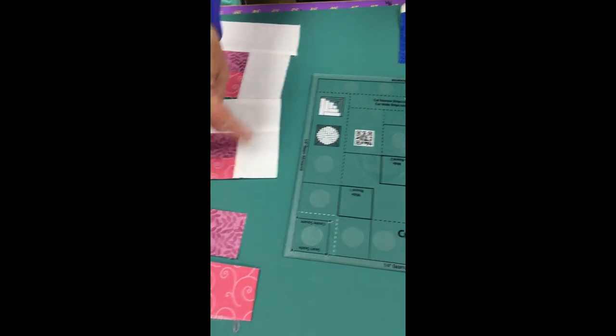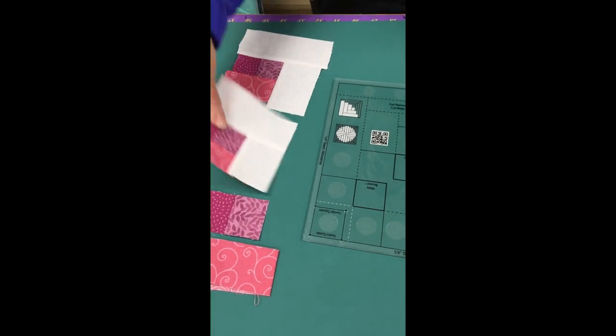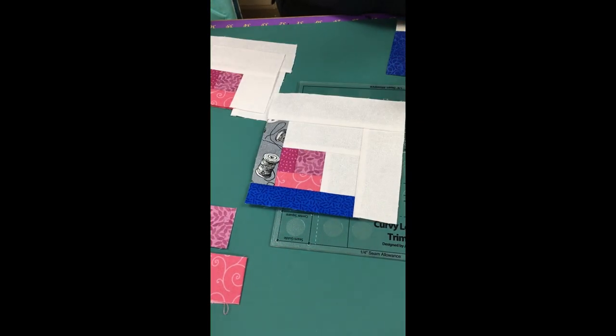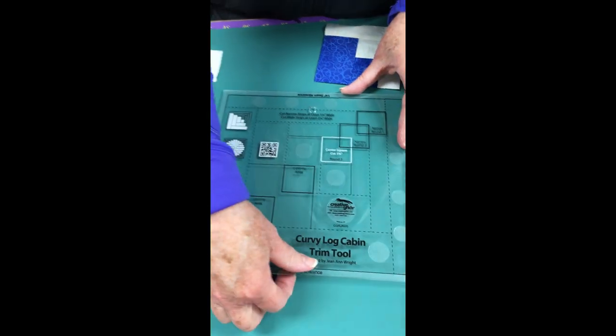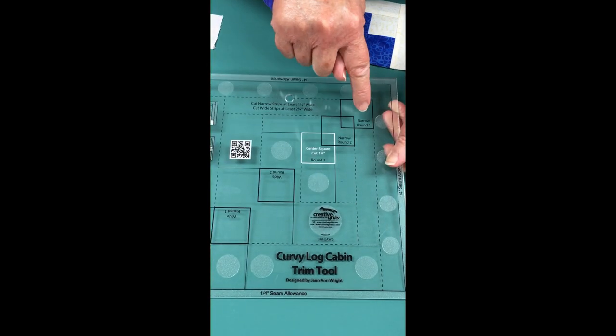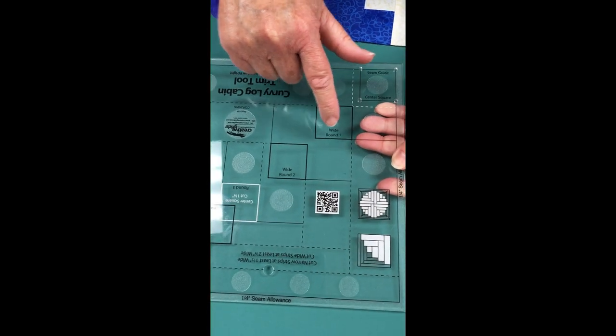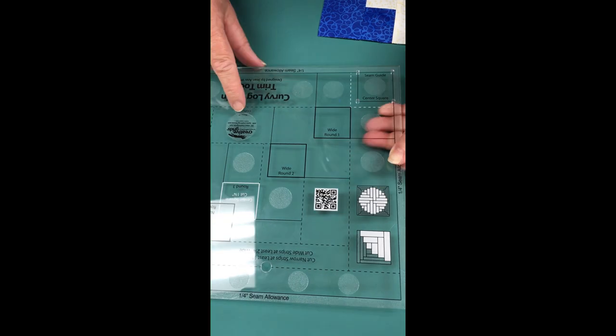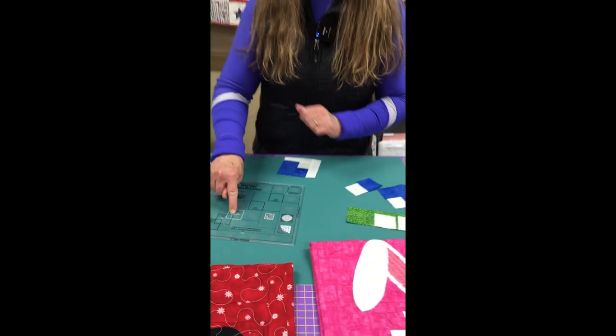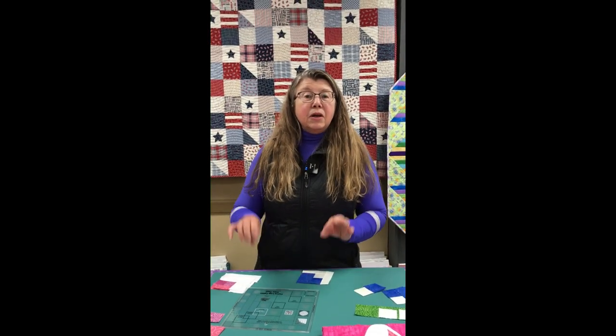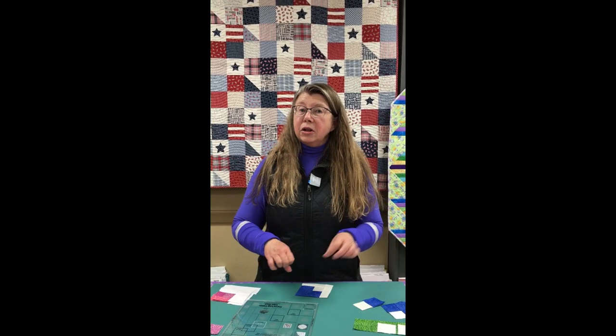Here's a block with one round added. You can continue to add rounds two and three—the ruler is marked so you can square up after every round. You have narrow rounds one, two, and three, and when you flip it, wide rounds one and two, then the third is your last trim. The dashed lines on the ruler line up with seam lines on your block, helping you position the ruler accurately before trimming.